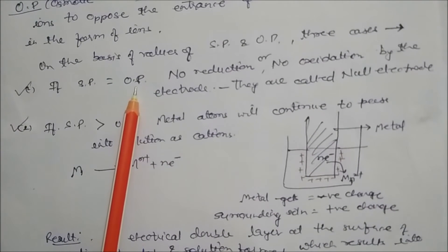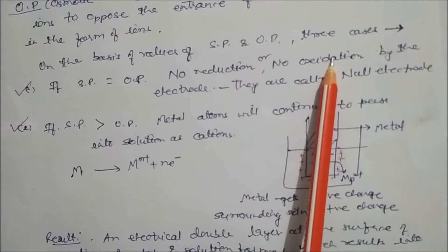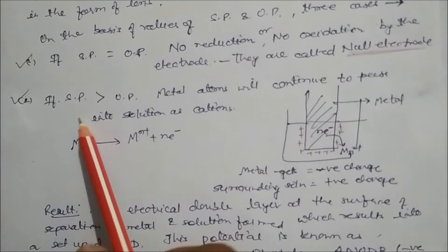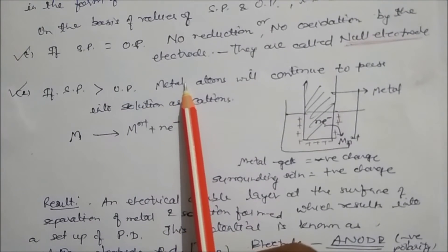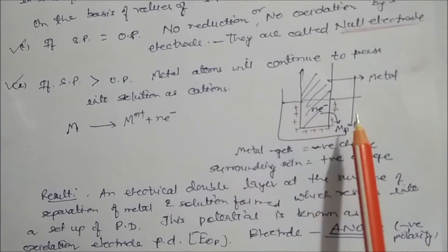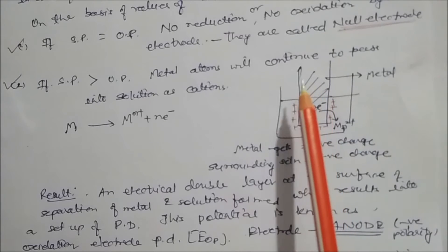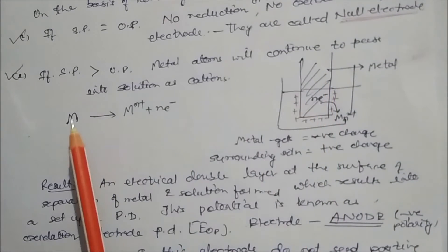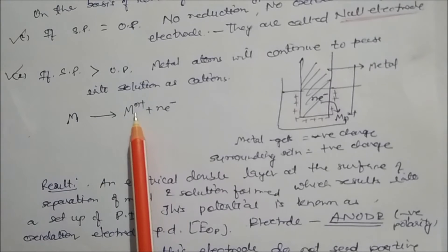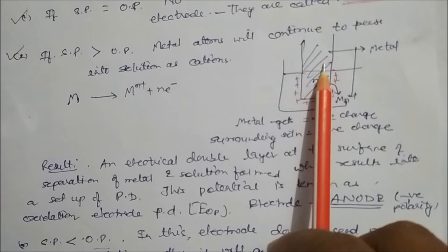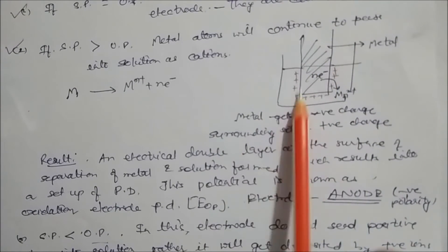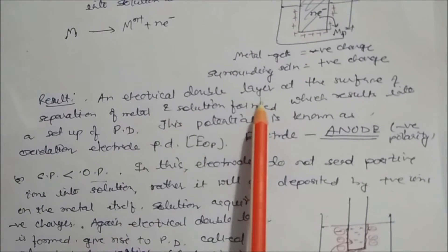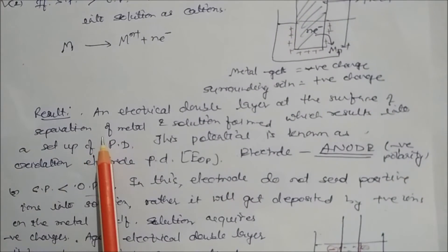Case 1: if solution pressure equals osmotic pressure, no reduction and no oxidation will occur at the electrodes — these are called null electrodes. Case 2: if solution pressure is greater than osmotic pressure, metal atoms will continue to pass into the solution as cations, making the solution positively charged while electrons remain in the metal. The metal acquires negative charge and the surrounding solution acquires positive charge, forming an electrical double layer at the surface of separation.